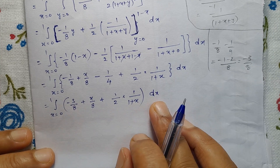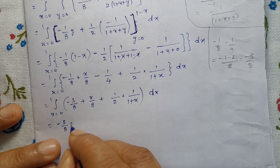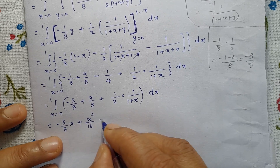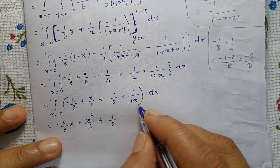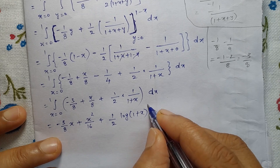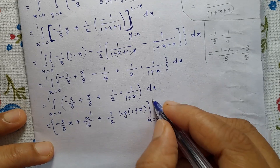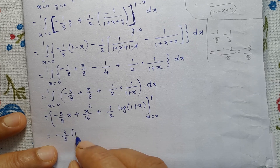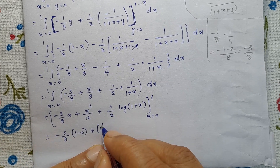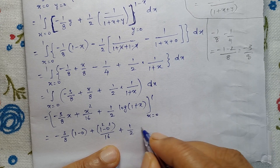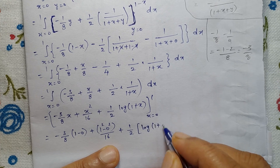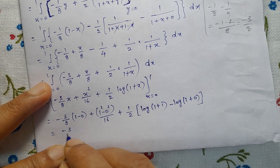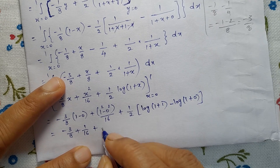Integrating x from 0 to 1: integral of minus 3/8 + x/8 + 1/2 times 1/(1+x), dx. This gives [minus 3x/8 + x^2/16 + 1/2 log(1+x)] from x = 0 to 1. Substituting: minus 3/8 times 1 + 1^2/16 minus 0^2/16 + 1/2 times log(1+1) minus log(1+0). So equals minus 3/8 + 1/16 + 1/2 log 2. (log 1 = 0).